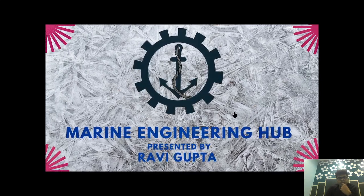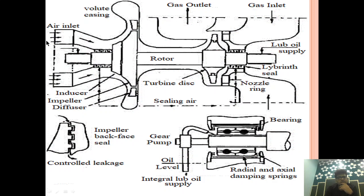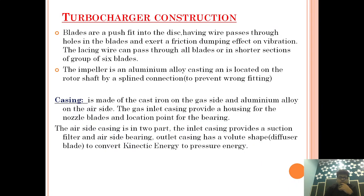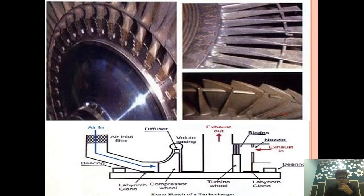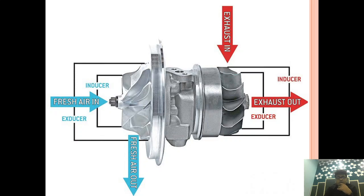Hello friend, welcome to Marine Engineering Hub, this is your narrator Ravi Gupta. Today we're going to talk about turbocharger construction. In today's video I will give you the idea about the turbocharger, how different parts are fitted and what are the importance of each part — for example the turbo index, the impeller, and each and every component. We will learn about the firtree, the lashing wire, and the different types of attachment of the turbocharger. After watching the video I guarantee that you will have a clear idea of turbocharger construction.